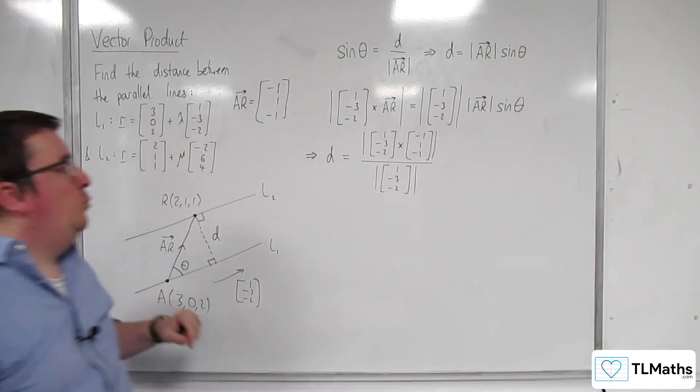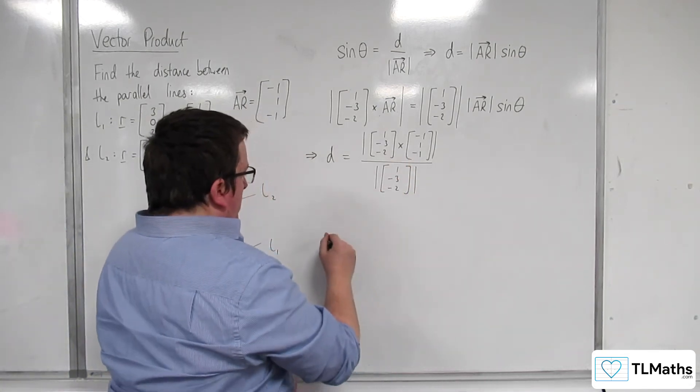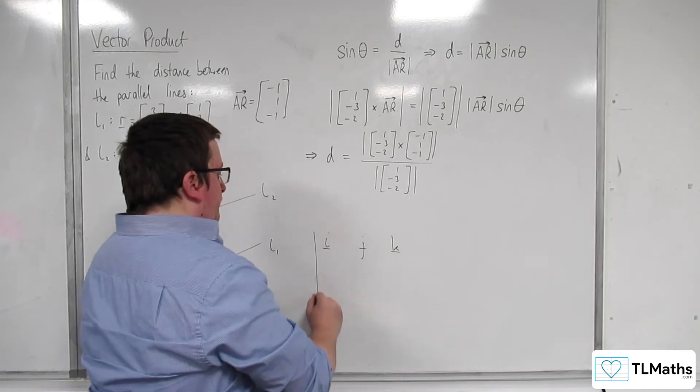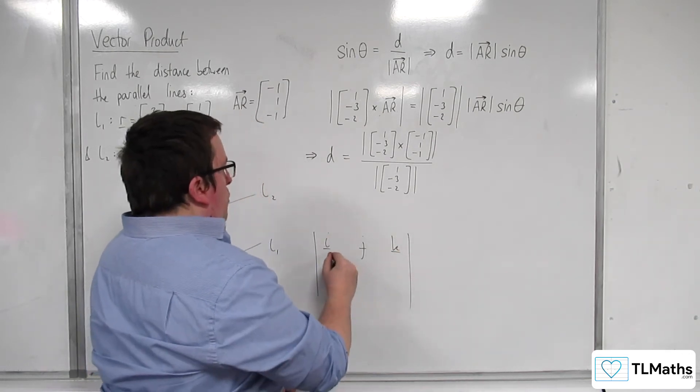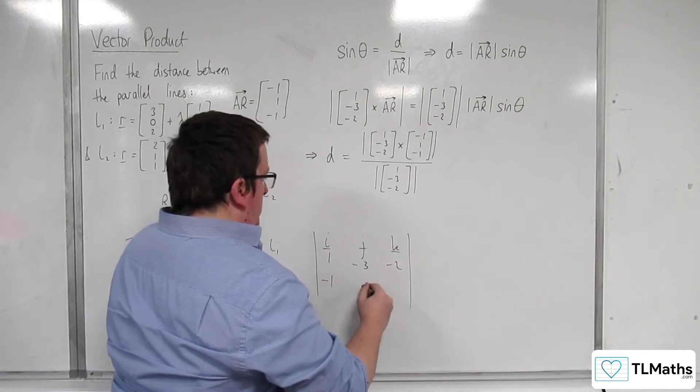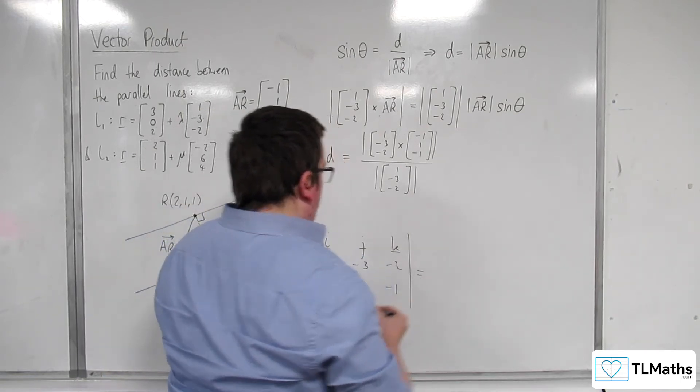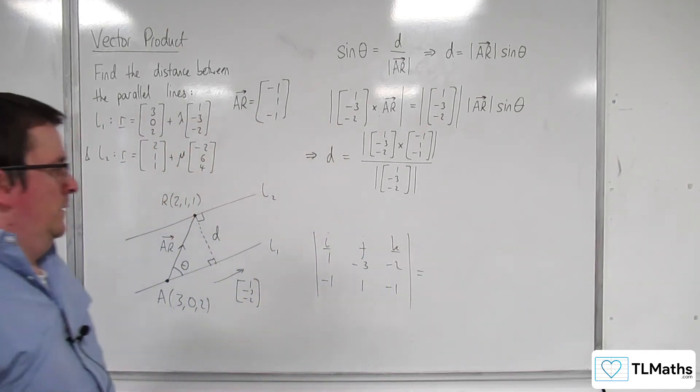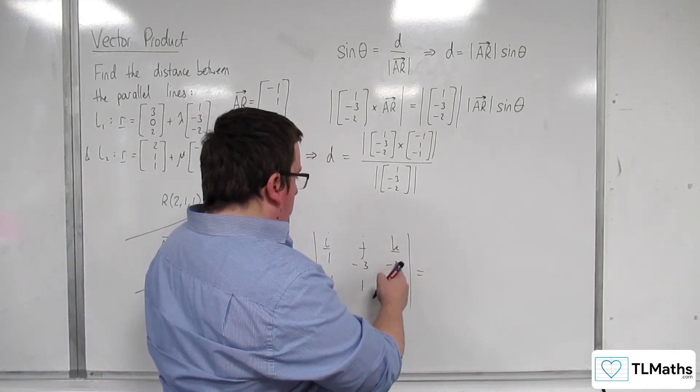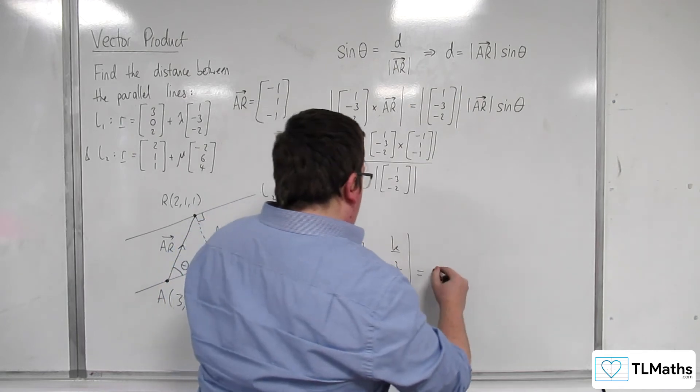So I'm going to need to work out this vector product. So i, j, k. 1, minus 3, minus 2, minus 1, 1, minus 1. So we've got 3 plus 2, so 5 i.